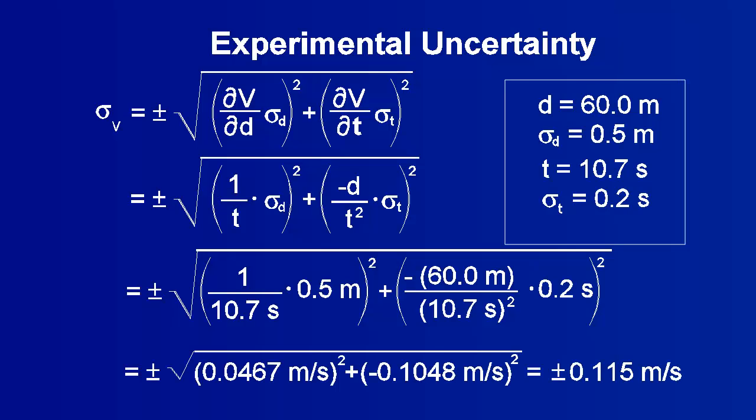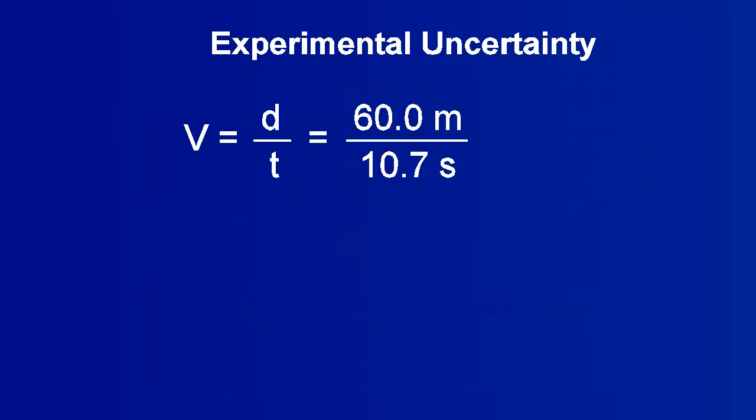Based on the two contributing factors seen here in the root sum of the squares, which of the two measurements has a larger effect on the uncertainty of the velocity? If more accuracy is needed for the velocity, which measurement needs to be more accurate? Note that the uncertainty of the velocity can be calculated independently of the velocity itself. Calculate the velocity and report the solution in the proper format.